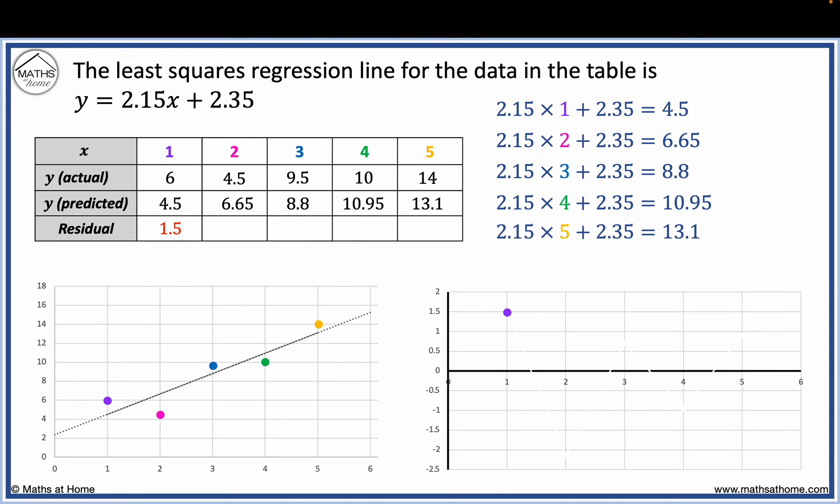For the second point, the residual is 4.5 minus 6.65, which is minus 2.15. Since this is negative, we plot the point below the axis on the residual plot. Then 9.5 minus 8.8 equals 0.7. 10 minus 10.95 equals 0.95.